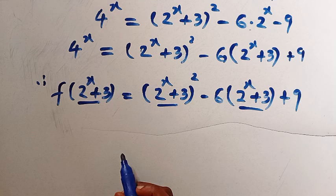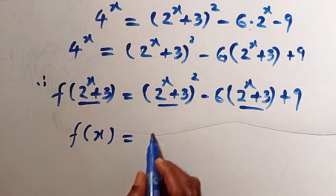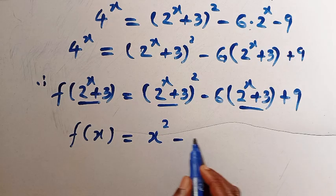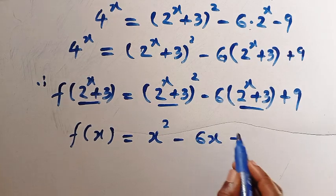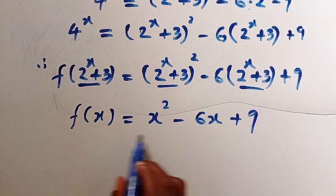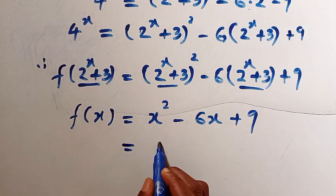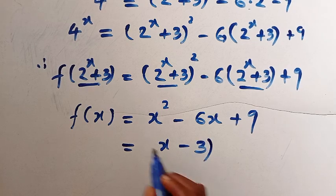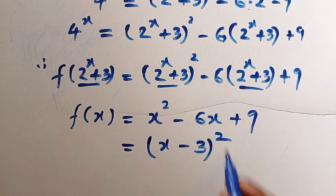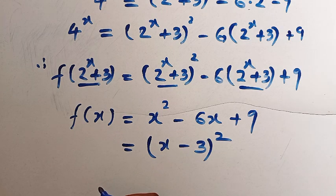Since all the arguments are (2^x + 3), we can replace them directly with x and get f(x) = x² − 6x + 9, which equals (x − 3)². This matches what we got in the first method. How do you solve this problem? Let us know in the comment box. See you in the next video — never stop learning, bye!